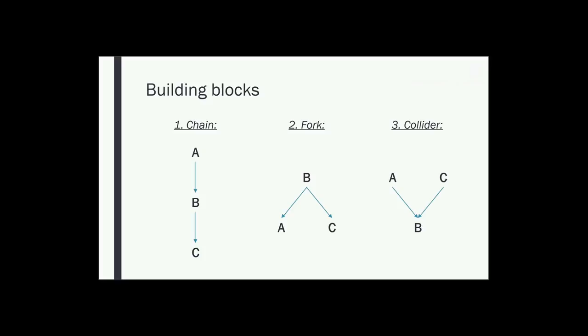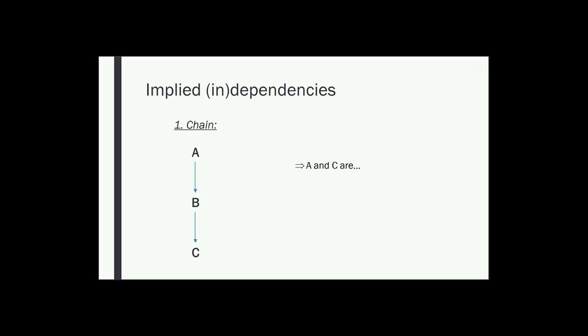You can view a DAG as a map of statistical dependencies, since each of the three causal structures implies certain statistical dependencies and independencies. The chain structure, in which A causes C indirectly via B, implies that A and C are statistically dependent. However, A and C become independent when you condition on B — we use boxes to indicate conditioning. Because A transmits an association to C via B, conditioning on B blocks that transmission. For example, if we're looking at heart attack survival, proximity to hospital affects time to treatment, which affects survival — so proximity is associated with survival, but conditioning on time to treatment removes that association.